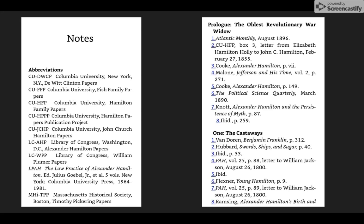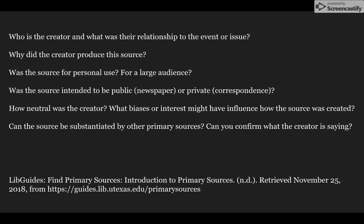When evaluating the legitimacy of a primary source, particularly one from a less prominent location or from a secondary source, there are several important criteria to consider: Who was the creator and what was their relationship to the event or issue? Why did they produce this source — was it for personal use or a large audience? Was it intended to be public, like a newspaper, or private, like correspondence? How neutral was the creator, and what biases might have influenced it? Can the source be substantiated by other primary sources?